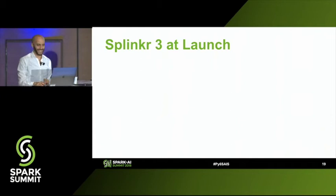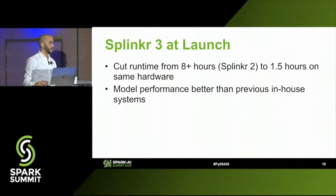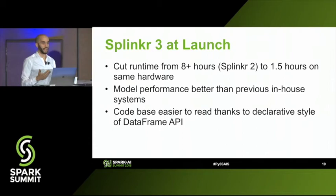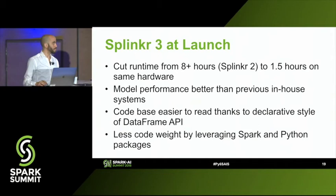When we launched Splinker 3, we were immediately able to cut the runtime of this global linkage job from over eight hours with the previous system down to about an hour and a half. The relatively simple logistic regression model did better than the previous system. The code base was a lot easier to read and maintain, thanks in large part to the DataFrame API and the declarative style of writing major transformations. And there was simply less code weight, because we were able to leverage the Spark and Python ecosystems.